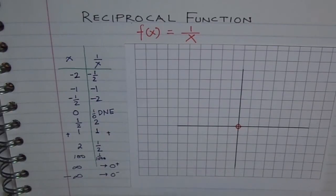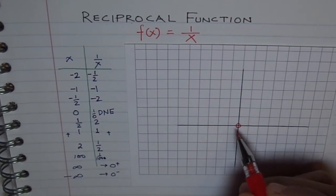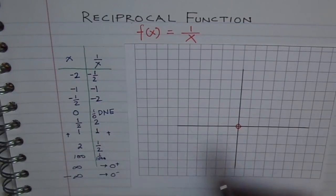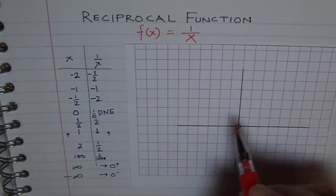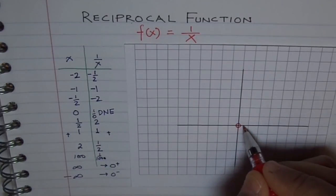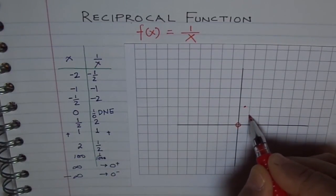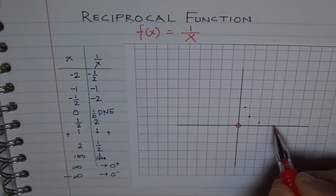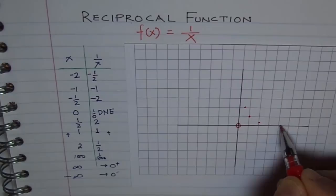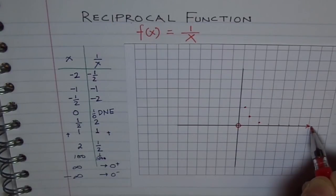Now let's plot these points. Zero does not exist. At x equals one half, the y value is 2 — so that's the point (1/2, 2). At x equals 1, we get f(x) equals 1. At x equals 2, f(x) is one half. As we go higher and higher, we approach the x-axis but we will never touch it. As we approach positive infinity, we approach the x-axis — the value 0.